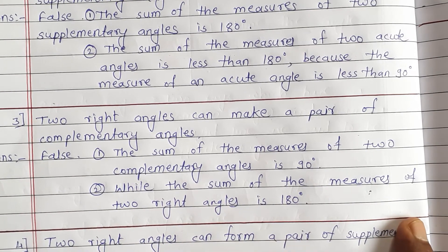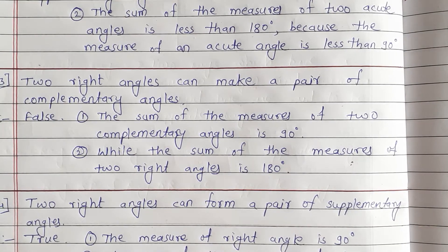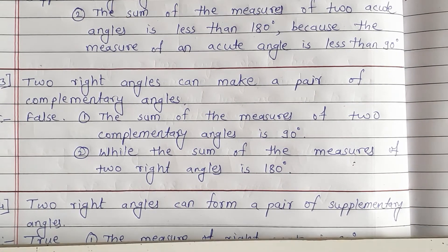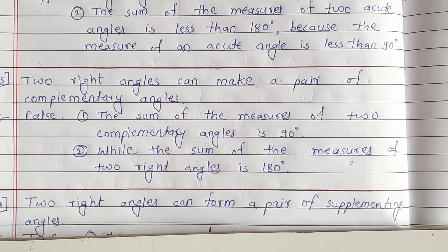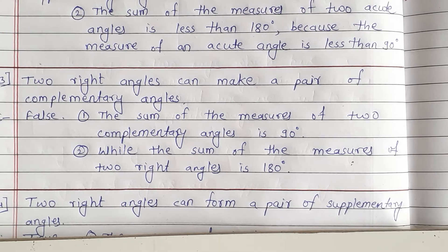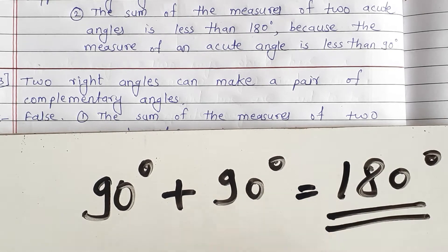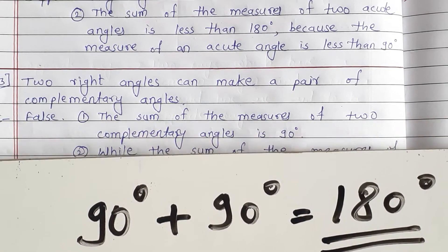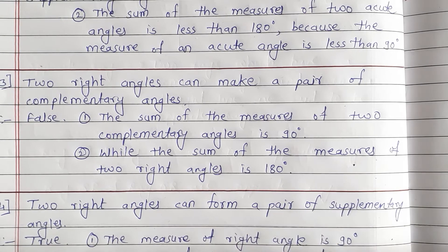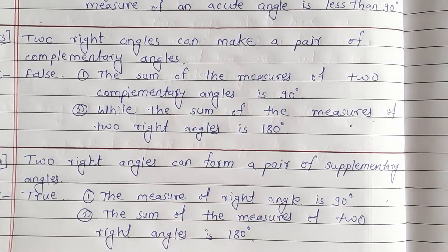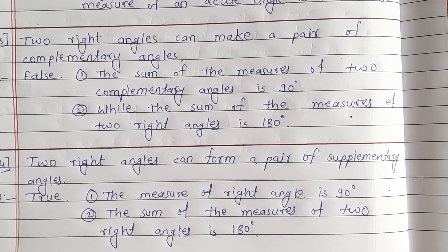The sum of the measures of two right angles is 180 degrees. Two right angles can form a pair of supplementary angles: 90 plus 90 equals 180, and that sum is the supplementary angle sum. So this statement is true. The measure of a right angle is 90 degrees and the sum of two right angles is 180 degrees.